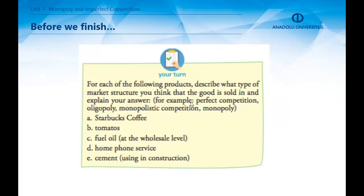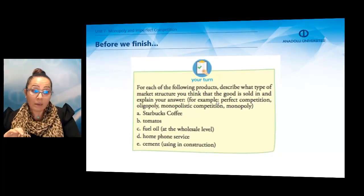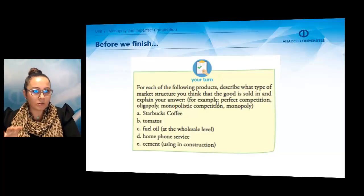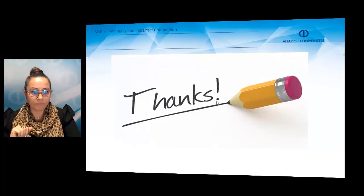Before we finish, for each of the following products, please try to describe what type of market structure you think the good is sold in and explain your answer. The products are: Starbucks coffee, tomatoes, fuel oil, home cleaning services, and cement used in construction. When answering, think about perfect competition, oligopoly, monopolistic competition, and monopoly. Thank you so much for joining us.